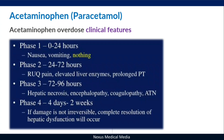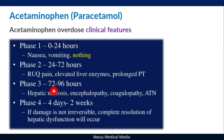The clinical features of acetaminophen overdose occur in four phases based on time. Phase one (0–24 hours): the patient will have nausea and vomiting. Phase two (24–48 hours): the patient will have right upper quadrant pain, elevated liver enzymes (AST, ALT, etc.), and a prolonged prothrombin time (PT).